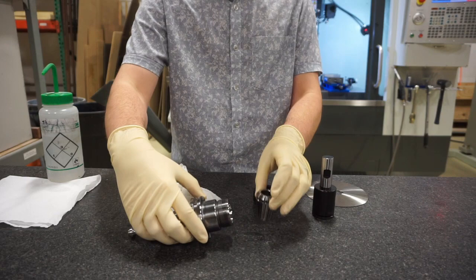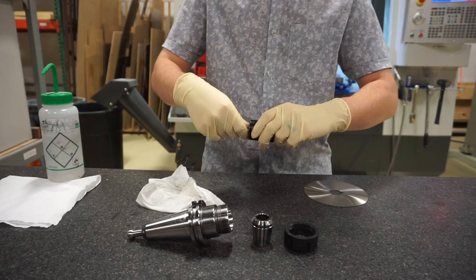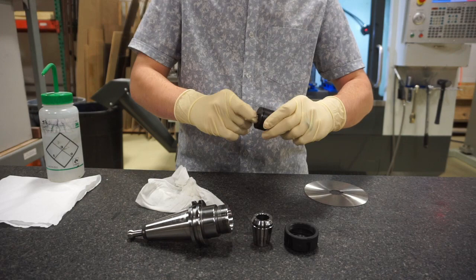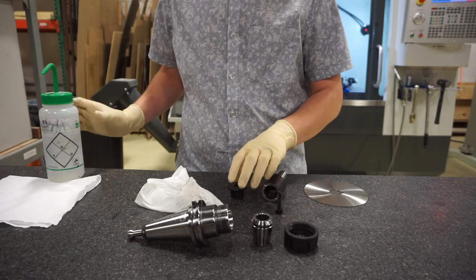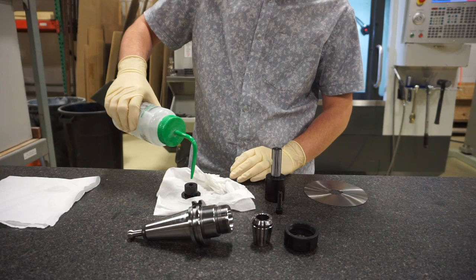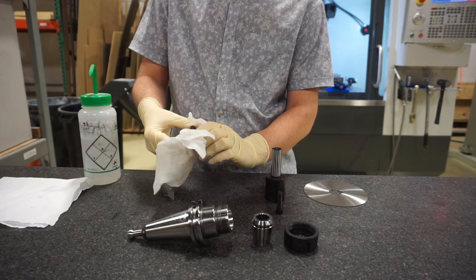Now, since our arbor and saw blade are brand new, both of these have a rust proof coating on them, and we'll want to make sure that we use some extra alcohol to get all that dissolved. And again, what we're most concerned about are our mating surfaces.